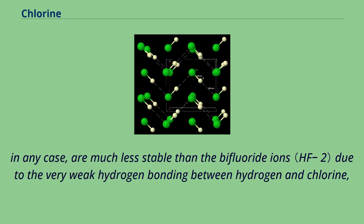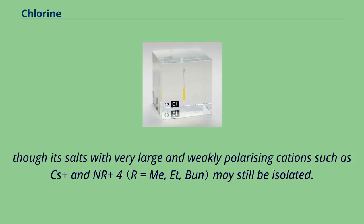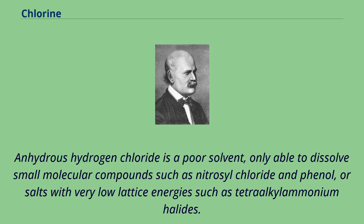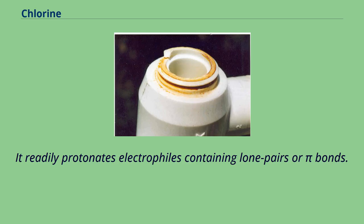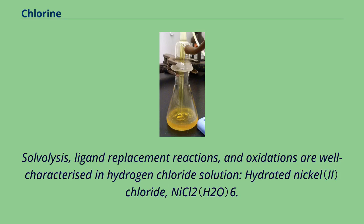The HCl₂⁻ ions are much less stable than bifluoride ions due to the very weak hydrogen bonding between hydrogen and chlorine, though salts with very large and weakly polarizing cations such as Cs⁺ and NR₄⁺ may still be isolated. Anhydrous hydrogen chloride is a poor solvent, only able to dissolve small molecular compounds such as nitrosyl chloride and phenol, or salts with very low lattice energy such as tetraalkylammonium halides. It readily protonates electrophiles containing lone pairs or pi bonds. Solvolysis, ligand replacement reactions, and oxidations are well characterized in hydrogen chloride solution.